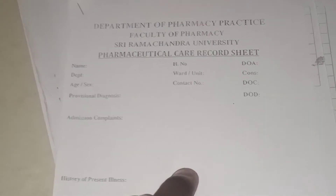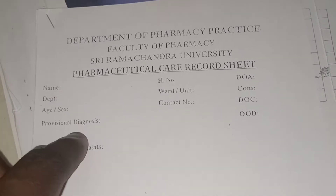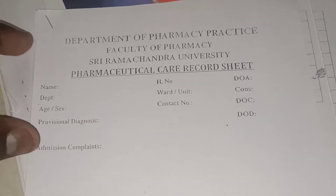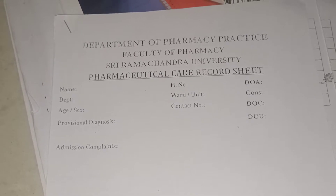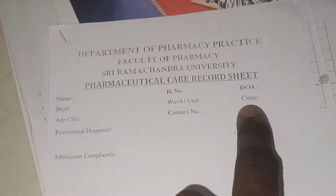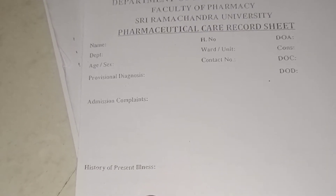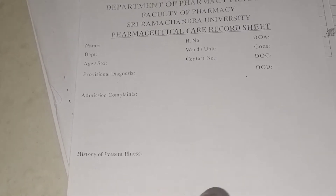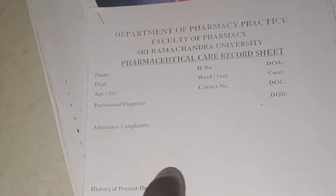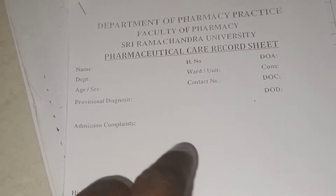First, the case sheet covers patient details: name, department, hospital number, ward number, contact number, date of admission, date of discharge, and date of consulting the doctor. Next is the admission complaints and history of present illness — if the patient comes with pain, you write what they felt. After analyzing information from the patient, you note the provisional diagnosis.